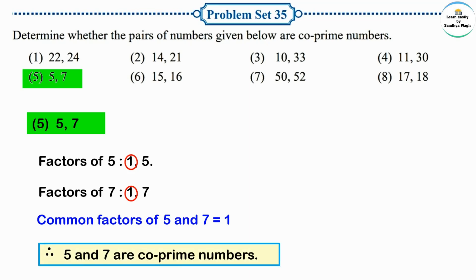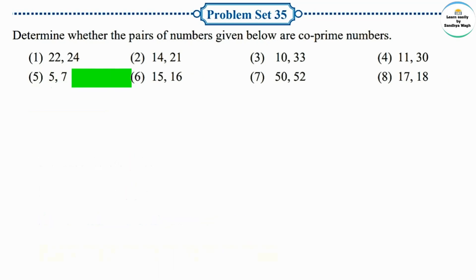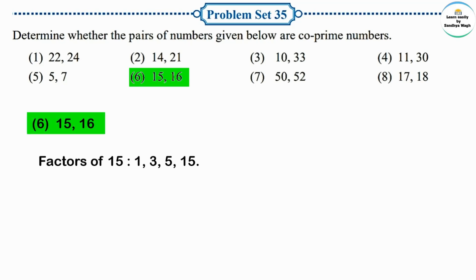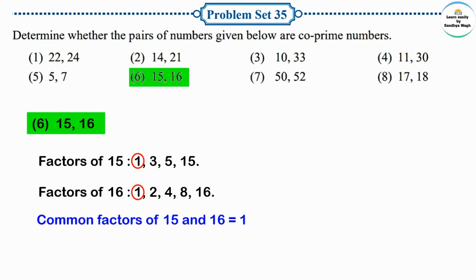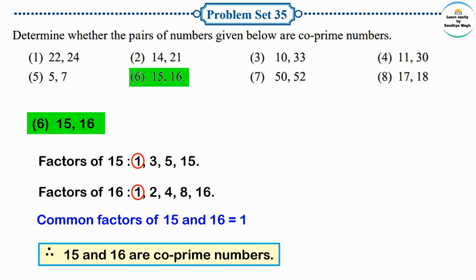Next pair: 15 and 16. Factors of 15: 1, 3, 5, 15. Factors of 16: 1, 2, 4, 8, 16. The only common factor in these two groups is 1. Common factors of 15 and 16 is equal to 1. Numbers which have only one as a common factor are called co-prime numbers. Therefore, 15 and 16 are co-prime numbers.